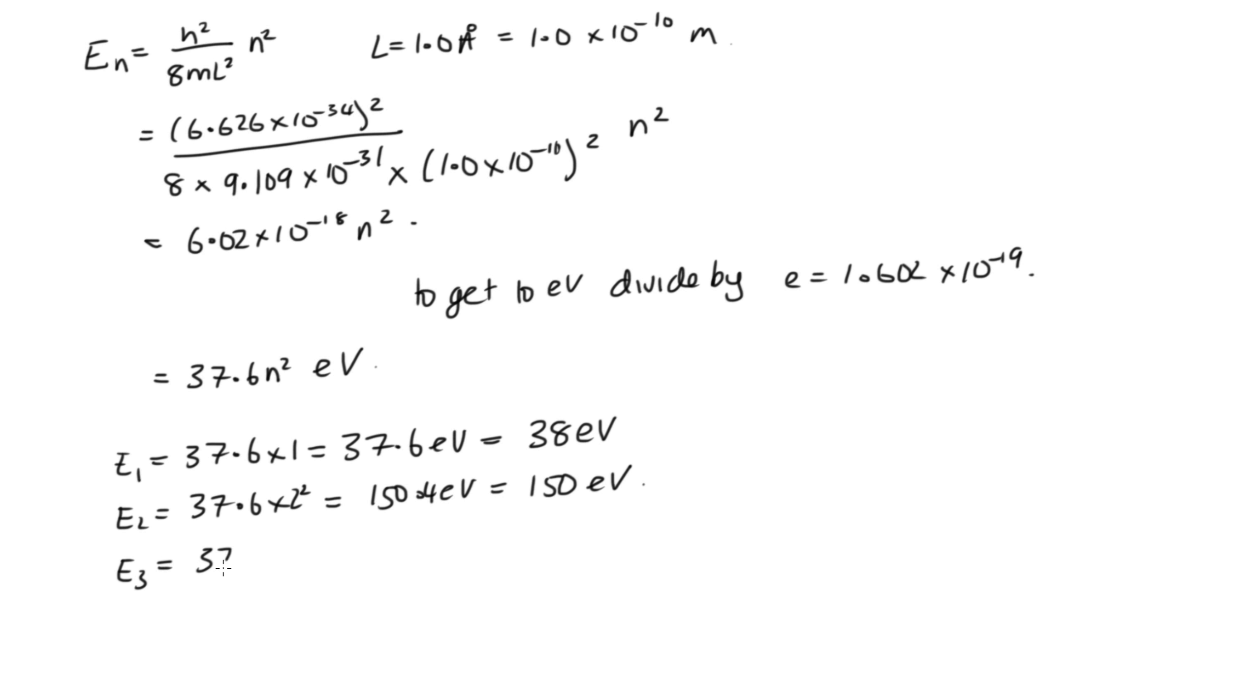E3, that's 37.6 times 3 squared, which is 9. So solving that, we get 340 electron volts. E4 is equal to 37.6 times 16, which gives us 600 electron volts.